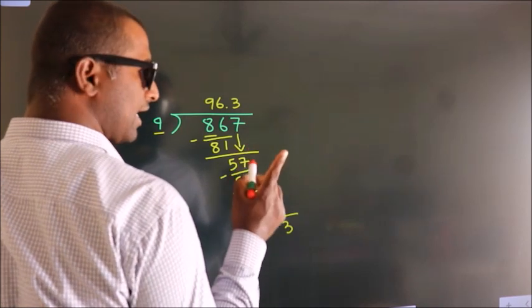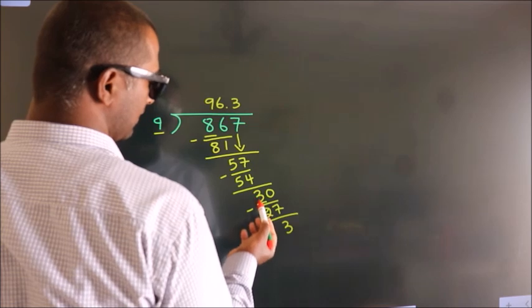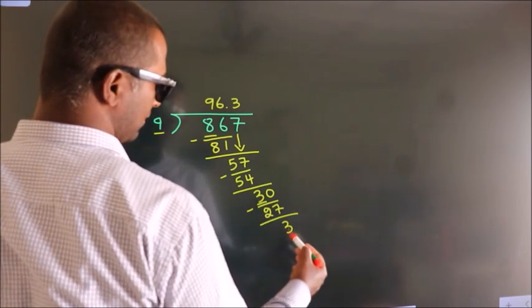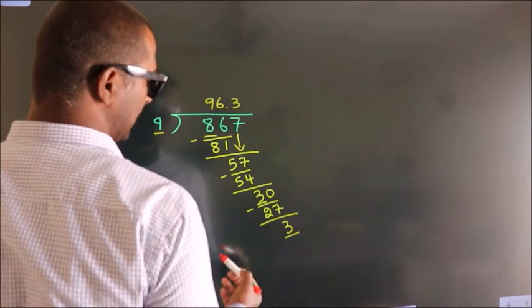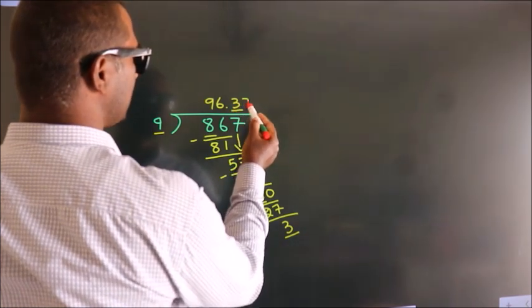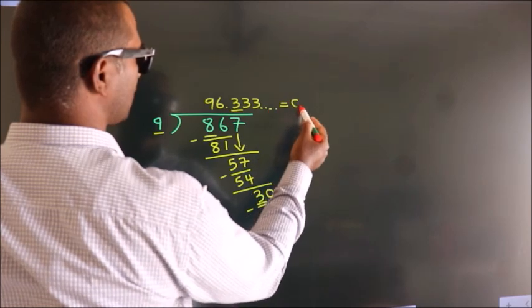Now you observe, we had 3 here and we got 3 again. That means this number keeps on repeating. So this is our quotient.